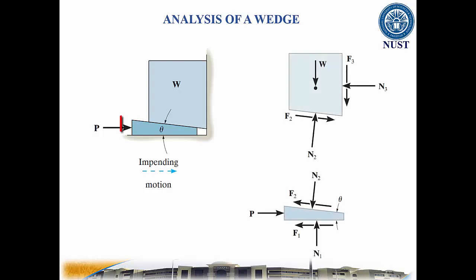It is easier to start with the free body diagram of the wedge since you know the direction of its motion. Note that the friction forces are always in the direction opposite to the motion or impending motion of the wedge. The friction forces are along the contacting surfaces and the normal forces are perpendicular to the contacting surfaces.